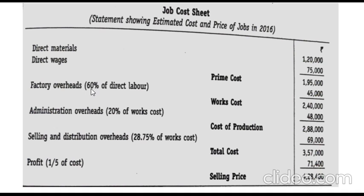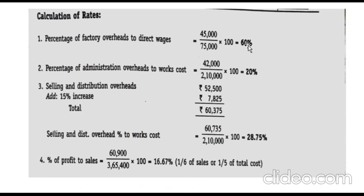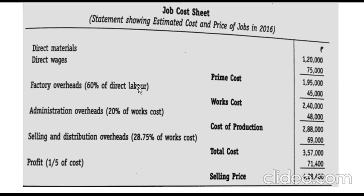From the working note, factory overhead percentage based on previous year data is 60 percent on direct wages. Direct wages for the current year is 75,000, so 75,000 into 60 percent equals 45,000 factory overhead. Prime cost 1,95,000 plus factory overhead 45,000 gives works cost of 2,40,000.